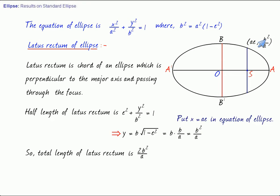There could be 4 such extremities: ae comma minus b square by a, minus ae comma b square by a, and minus ae comma minus b square by a. If nothing is specified, the extremity of the latus rectum must be taken as ae comma b square by a.